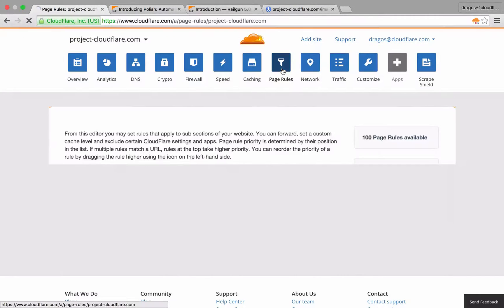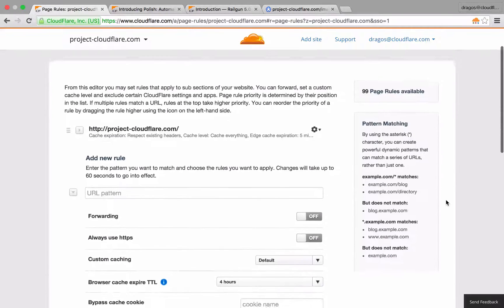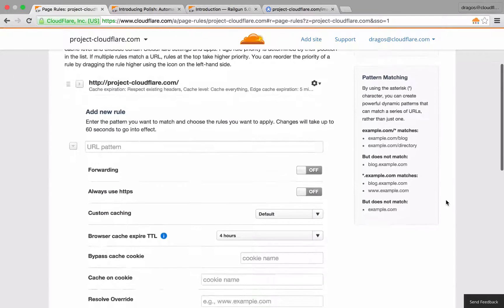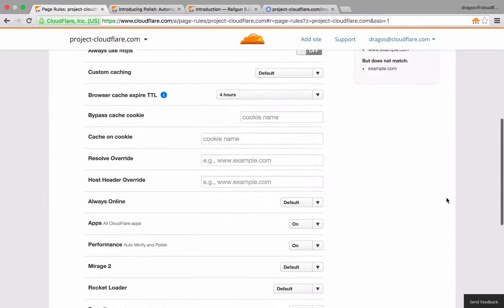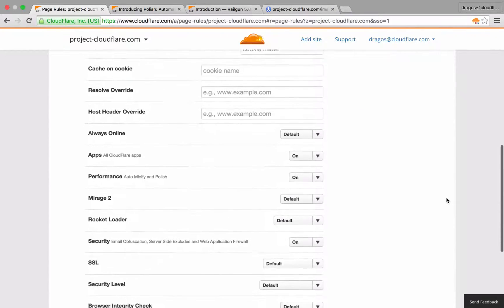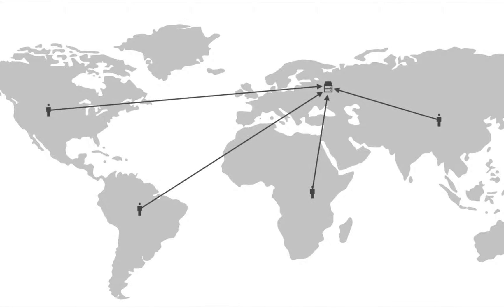Let's take a look at page rules. Page rules are incredibly powerful tools for controlling how Cloudflare works on your site on a page-by-page basis. In a traditional setup without Cloudflare, a single server is located in a single geographic location and requires your visitors to literally travel the globe to get to your website.